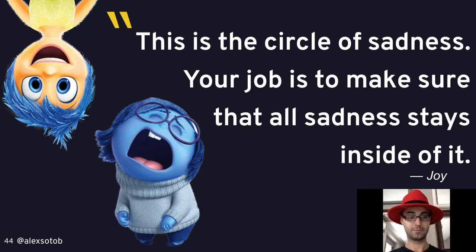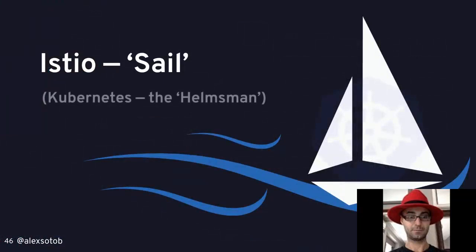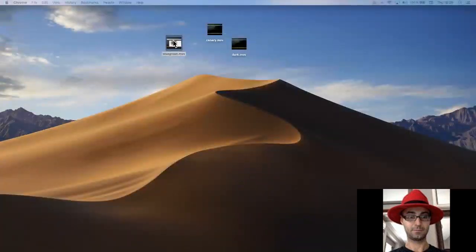Let's see a demo of some of these concepts - blue-green deployment, canary releases, and mirroring or shadowing traffic. In this case I'm going to use Kubernetes and Istio. Istio is a service mesh - a dedicated infrastructure layer that allows you to modify the network communication between services. For example, you can redirect traffic from one service to another, encrypt traffic between services, or add resiliency like automatic retries. I recorded the demo because sometimes I have performance problems when sharing my screen.